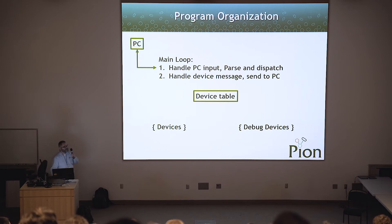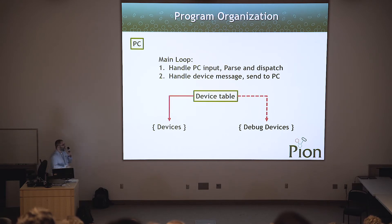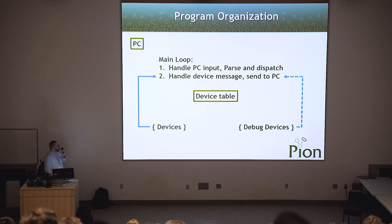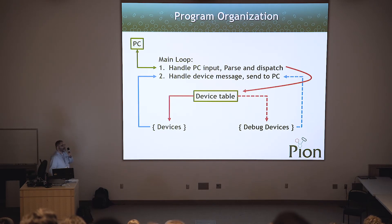How does the main program run to control all these devices? It's fairly straightforward. The PC sends something to the main loop, which parses it and looks up the devices the command is intended for in a device table. That may send it either to real devices if they're connected, or to software debug devices if that's the mode we're operating in. Those devices then send a response back to the main loop, which sends it back to the host Windows PC that's controlling it.